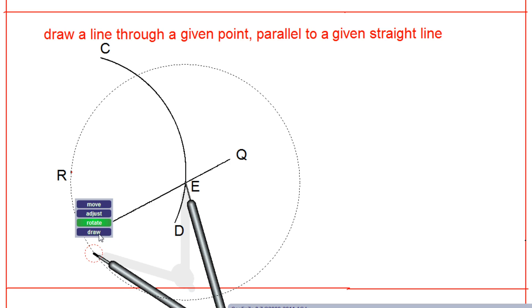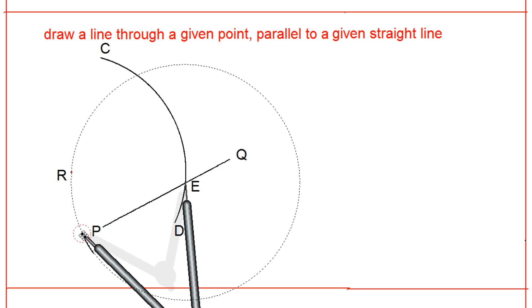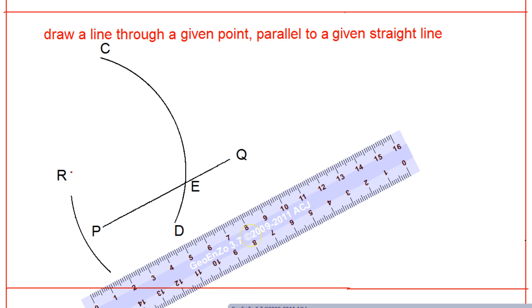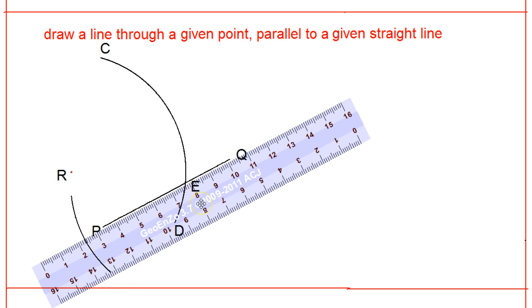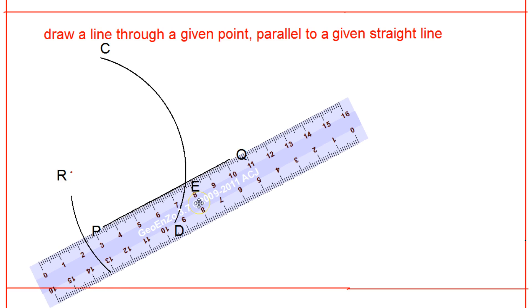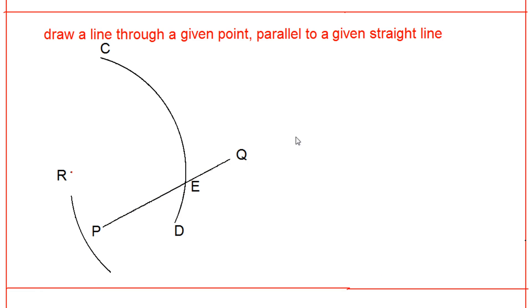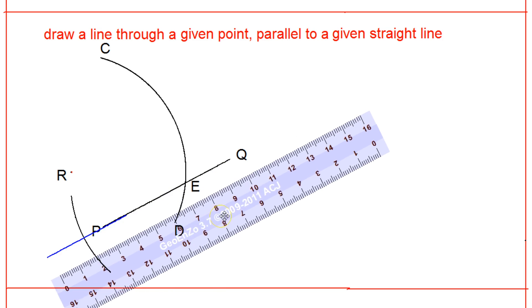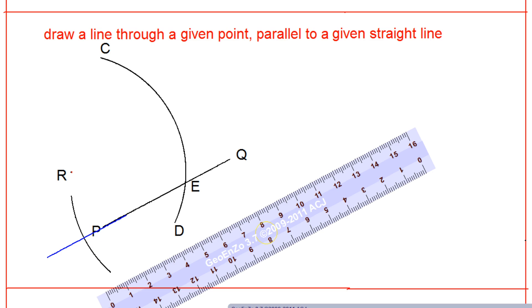This will cut the line PQ or its extension at some point, say it will be cutting the line at point F. So this line is a smaller line so I have to extend it. Let us extend the line PQ little more, just to show the difference with the earlier one. I will make it with a different color. It is cutting the line PQ at point F.